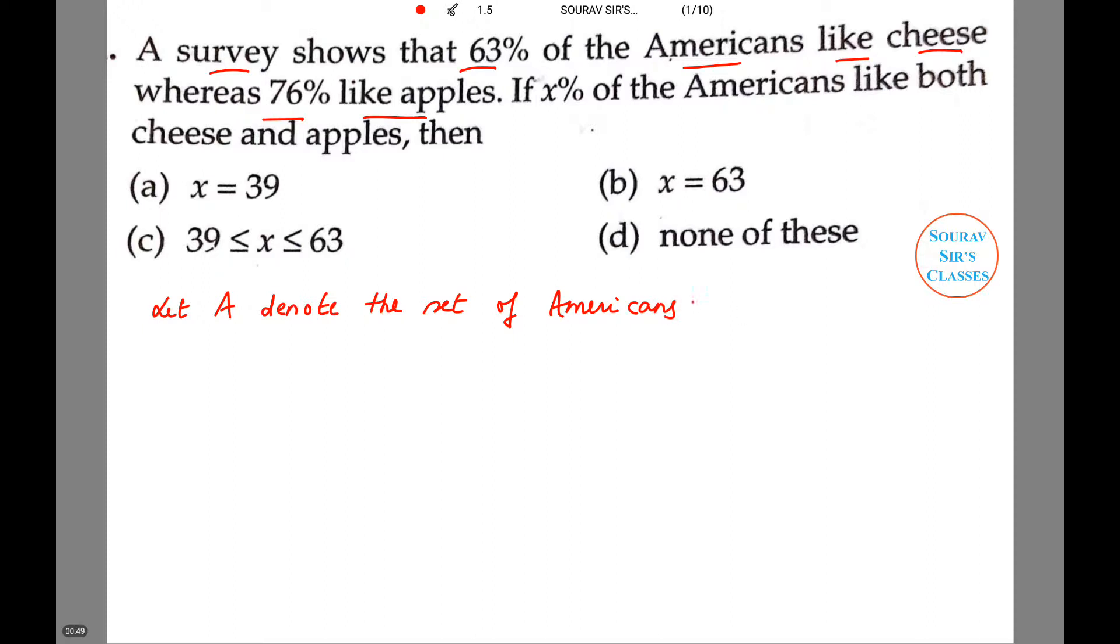So let us first suppose, or let A denote the set of Americans who like cheese, and let B denote those Americans who like apple.